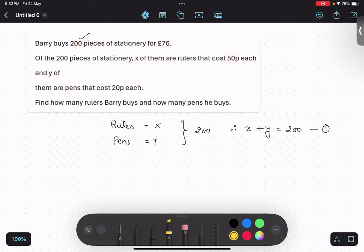Now, what is the cost of one ruler? One ruler is 50 pesa each. And one pen is 20 pesa each. And total money which I am spending is 76. Now the unit should be same. If this is in pesa, this should be converted into pesa, or this should be converted into the same unit over here.